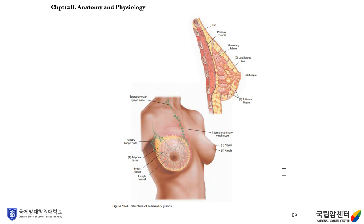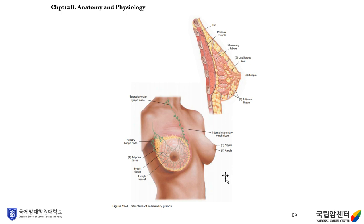Each breast is composed of 15 to 20 lobules (milk-producing glands) drained by a lactiferous duct that opens on the tip of the raised nipple. The areola is a border of slightly darker skin circling the nipple. During pregnancy, the breasts enlarge and remain so until lactation ceases; at menopause, breast tissue begins to atrophy. This figure shows the structure of the mammary glands, including the nipple, adipose tissue, lactiferous duct, mammary lobe, lymph vessel, areola, internal mammary lymph nodes, and supraclavicular lymph nodes.